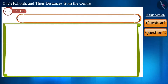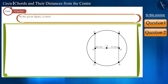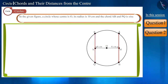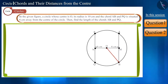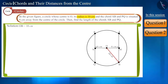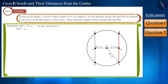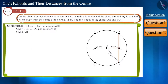Let's move forward and solve one more question. In the given figure, a circle whose center is O has a radius of 10 cm. The chords AB and PQ are situated 6 cm away from the center of the circle. Find the length of chords AB and PQ. In the figure, if we join center O and point B, we obtain OB, which is the radius of this circle. We are given that the radius is 10 cm, so OB = 10 cm. OM is perpendicular to chord AB and its length is 6 cm.